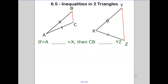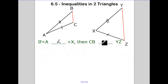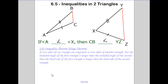Today we're going to be talking about inequalities in two different triangles — comparing two different triangles. We kind of discovered this in the Geometry Sketch Pad activity. Angle A looks like it's less than the measure of angle X, so therefore side CB is going to be less than YZ. Our theorem is the Side-Angle-Side Inequality Theorem, also called the Hinge Theorem in many other books.